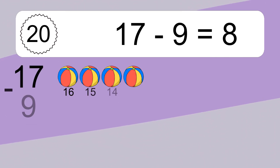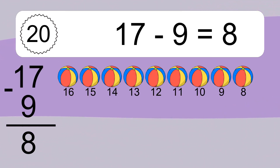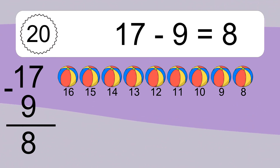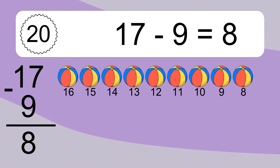17 minus 9 equals what? 17 minus 9 equals 8. Let's count it: 16, 15, 14, 13, 12, 11, 10, 9, 8.